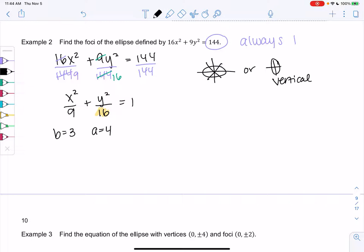I know my foci will go on the y-axis, so the c's will be y values. We'll get 0 plus or minus c. Let's go ahead and find c. c² is a² minus b², so 16 minus 9, which is 7. So c is the square root of 7. We'll get (0, √7) and (0, -√7) will be my foci.